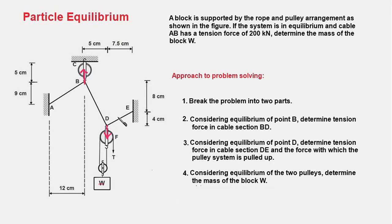A single cable running around two pulleys has the same tension throughout its length, but that is not the case for cable ABDE — the tensions in its sections will be different. By considering equilibrium of point B we find the tension in section BD, then considering equilibrium of point D we find force P acting downwards on the cable, which pulls up the pulley system, and finally we find the mass of block W.